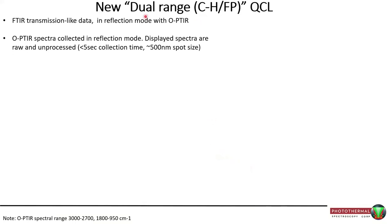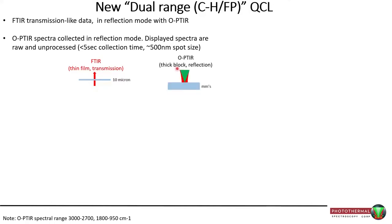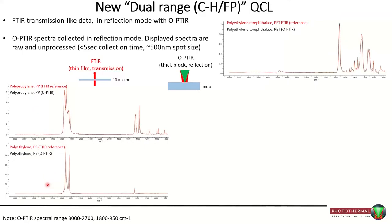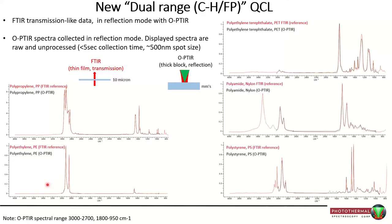To give examples with the dual-range CH fingerprint QCL: all data shown are in reflection mode, giving transmission-like spectra, collected in under five seconds from about a 500 nanometer spot. Comparing FTIR transmission reference spectra on thin samples versus OPTIR reflection on thick blocks — for polypropylene, polyethylene, PET, nylon, and polystyrene — the red FTIR reference and black OPTIR spectra are at first glance almost perfectly overlapped.